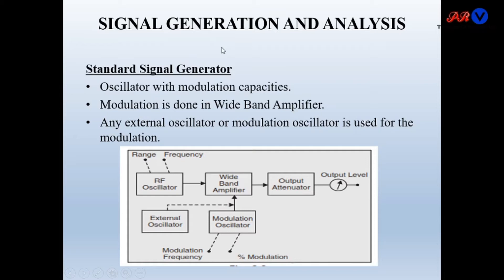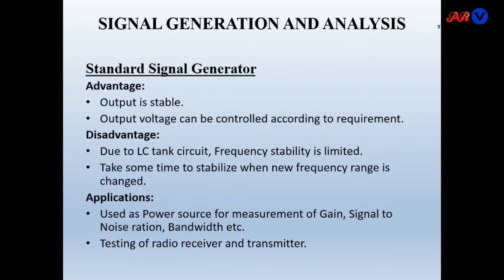The standard signal generator is a simple generator but with modulation capabilities. Advantages: its output is stable and the output voltage can be controlled according to requirements. Disadvantage: due to the LC tank circuit, frequency stability is limited, and it takes some time to stabilize when a new frequency range is selected. Application: used as a power source for measurement of gain, signal-to-noise ratio, bandwidth, and also for testing radio receivers and transmitters.